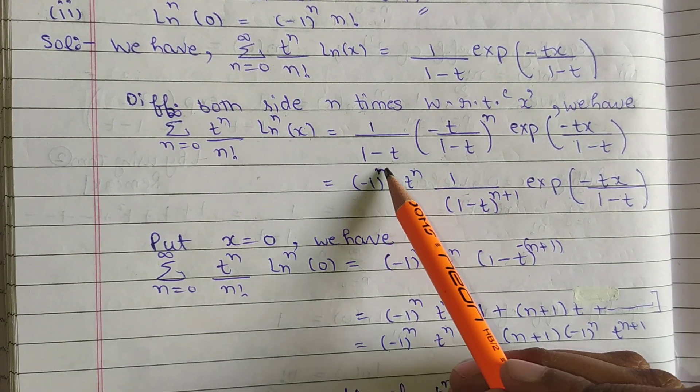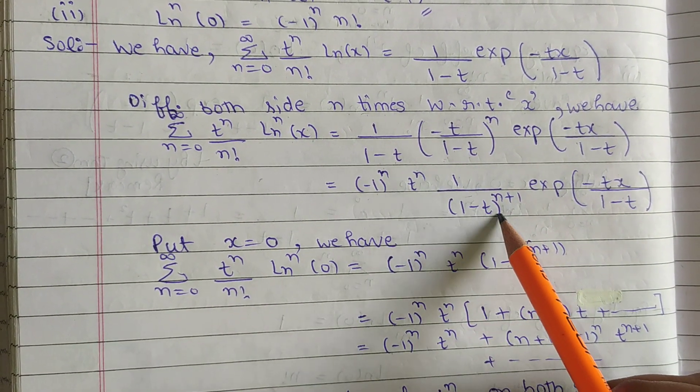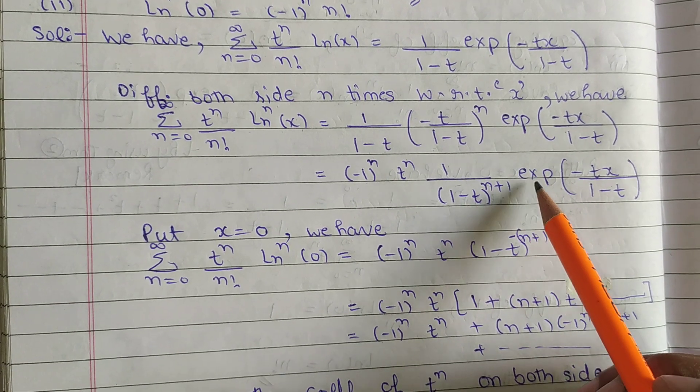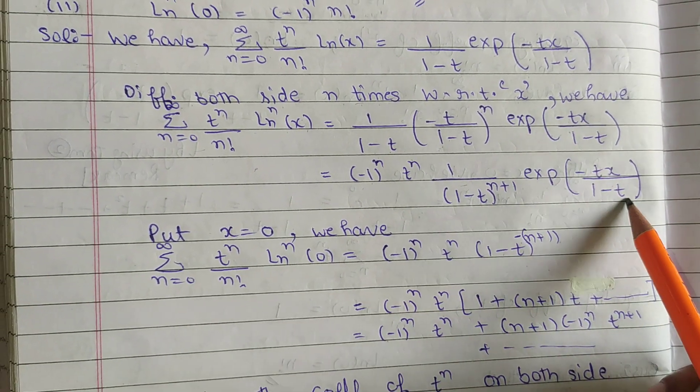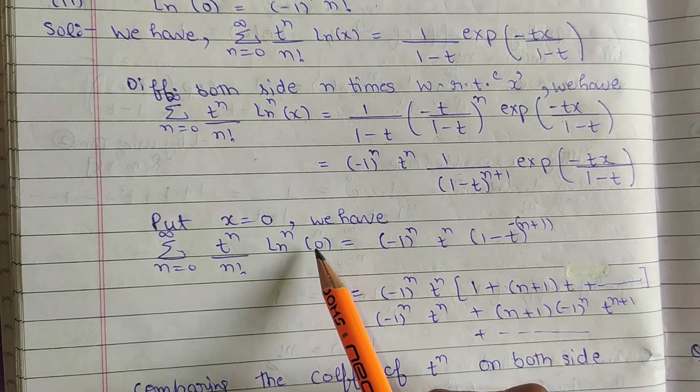Then we have (-1)^n t^n / (1-t)^(n+1) exponential(-x/(1-t)). Then put x equal to 0.